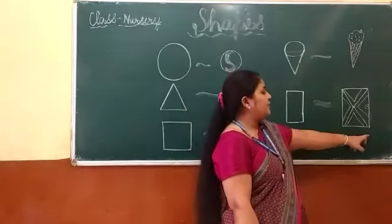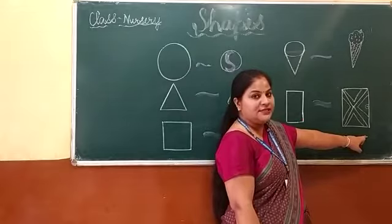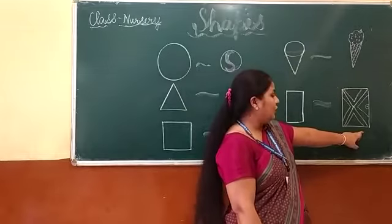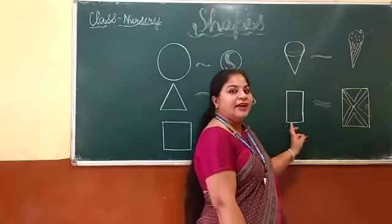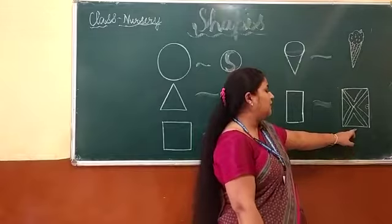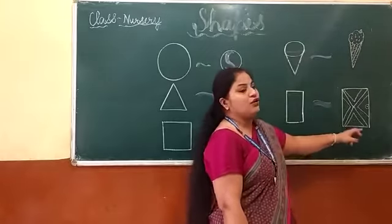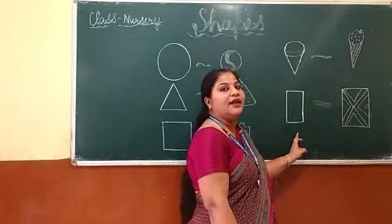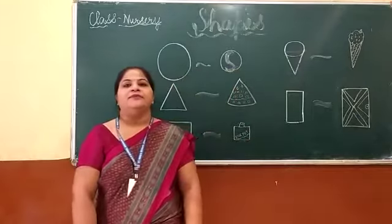And here is dough. This is a dough. Dough looks like a rectangle. Okay students, which shape is this? This is a rectangle. And dough looks like a rectangle.